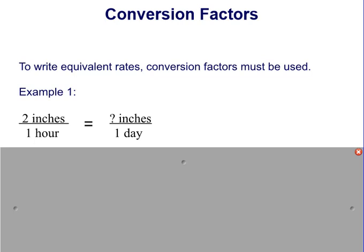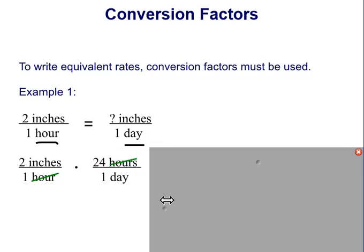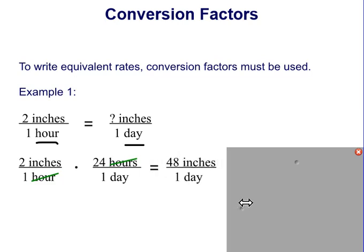Sometimes we don't have the conversion factor and have to write one ourselves. For example, two inches per one hour equals how many inches in one day? Inches stays the same, but we're going from hours to days. We know there are 24 hours in one day, so we multiply two inches over one hour by 24 hours over one day. The hours cancel, leaving us with 48 inches per one day.